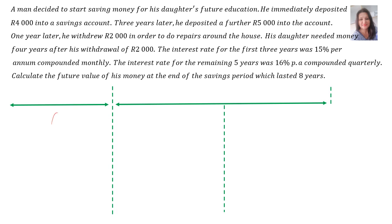You will see that this is a lot of information, so let's see if we can highlight the important information. Let's start from the beginning. A man decided to start saving for his daughter's future education — he immediately deposited 4000 rand into a savings account.